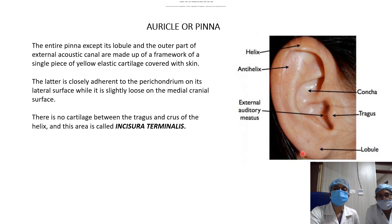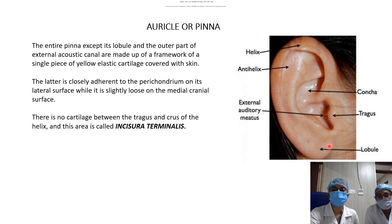The outer curvature is known as the helix. The prominent point is the crux of the helix. Medial to the helix is the antihelix. The entire central depression is known as the concha; the crux of the helix divides it into the superior cymba concha and the inferior cavum concha. The small cartilaginous projection is the tragus. Below the tragus is the lobule, which has no cartilage — it consists only of fat and subcutaneous tissue.